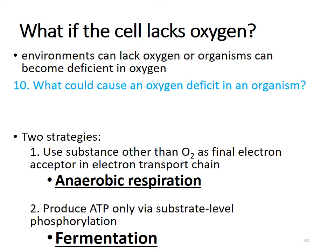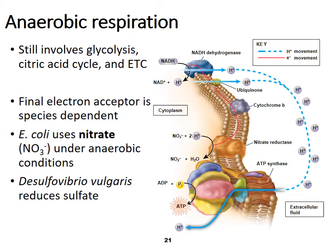Anaerobic respiration still involves glycolysis, the citric acid cycle, and oxidative phosphorylation and chemiosmosis, but uses a final electron acceptor that is not oxygen. For example, E. coli uses nitrate under anaerobic conditions, and Desulfovibrio vulgaris uses sulfate. Humans cannot do true anaerobic cellular respiration.